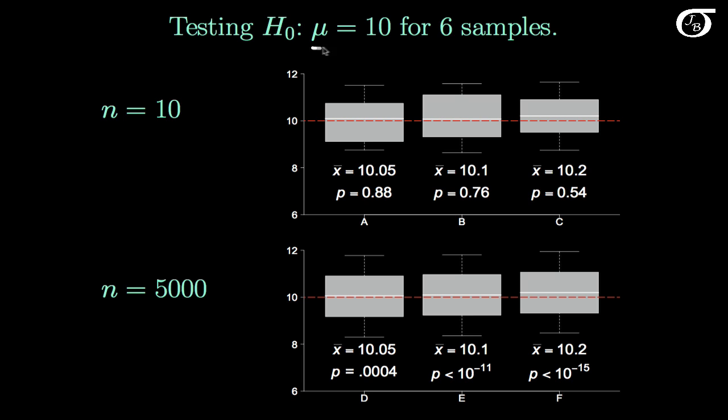To illustrate, suppose we're testing the null hypothesis that mu equals 10 in 6 different situations. I've set the variance to be exactly equal in the 6 different spots to level the playing field.